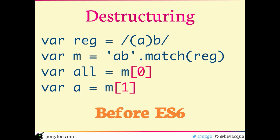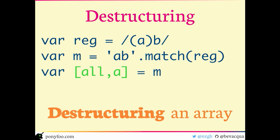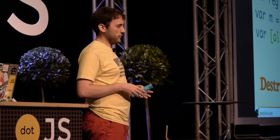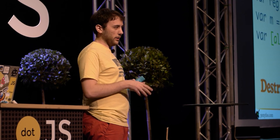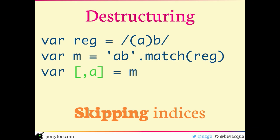It's also useful when dealing with arrays, because you can destructure arrays too. This really shines with regular expressions, because before ES6 you had to reference different indexes individually and they might not make much sense. In ES6 you get rid of all that and just say the first one is 'all', the second is 'a', etc. And if you don't care about 'all' — which normally you don't when dealing with regular expressions — you can skip it and no variable will be allocated for that index.